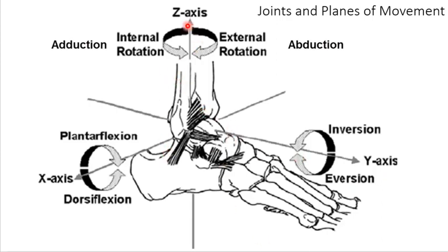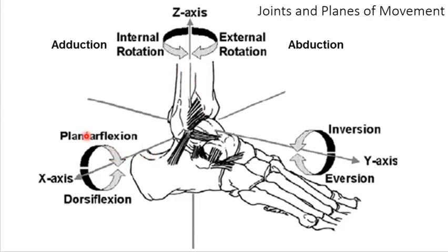To reiterate: on the z-axis, you're getting internal-external rotation, which is the same as adduction-abduction, and that's in the transverse plane. Instead of calling it internal-external when the tibia turns, the motion created at the foot is adduction or abduction. On the x-axis in the sagittal plane, it's plantarflexion and dorsiflexion. And in the frontal plane, instead of abduction and adduction, it's inversion-eversion.